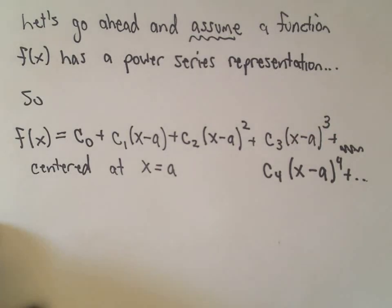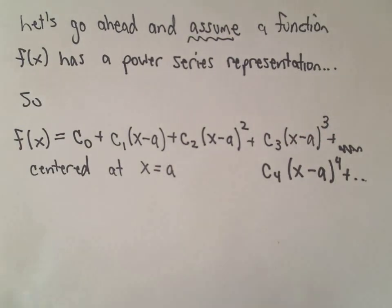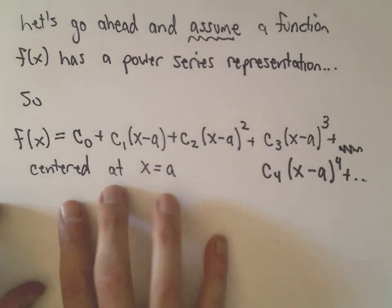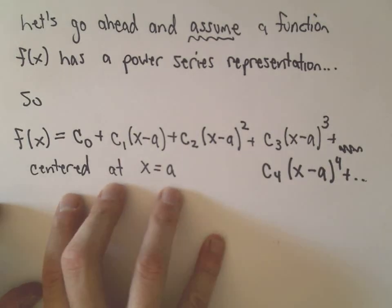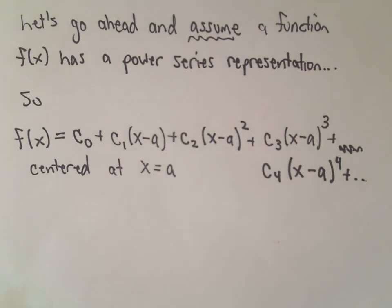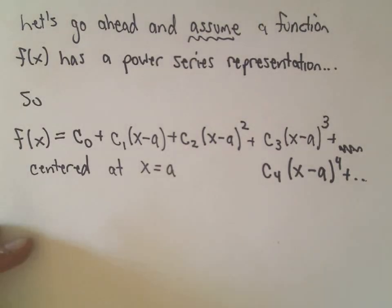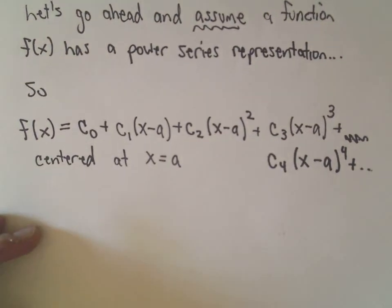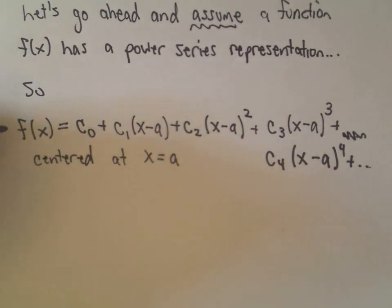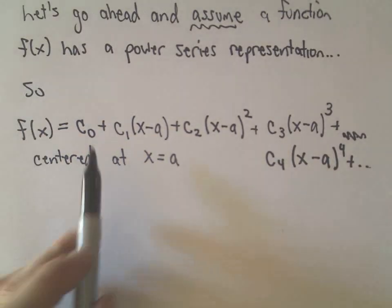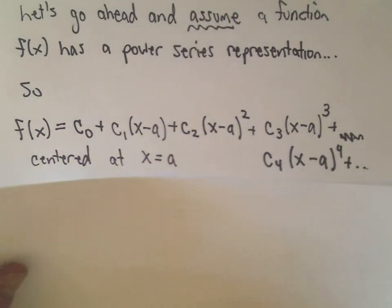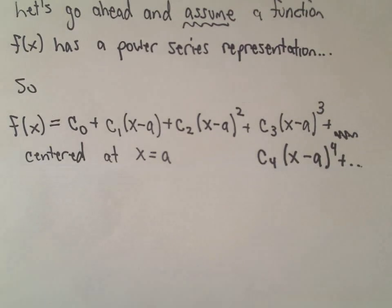This is a power series representation and we say it's centered at x equals a. There are geometric implications about centering it at a certain value, but I'm not going to go into that — otherwise this video would become a seminar on Taylor series. I just want to talk about coming up with the formula. We're going to assume f(x) has a Taylor series expansion and start making observations using derivatives.